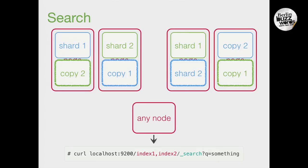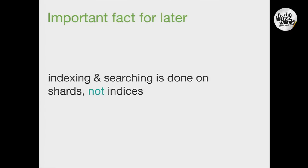The key takeaway is that when we do something with data, like searching, it's about which shards participate in that operation — those are the shards we need to go to. It doesn't really matter how we determine which shards we need. That will be useful later. If you have any questions, please raise your hand.